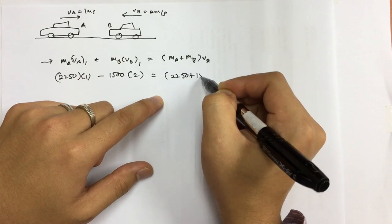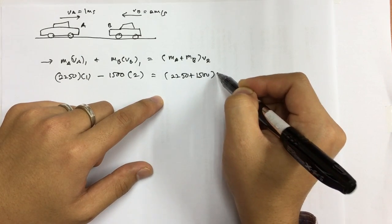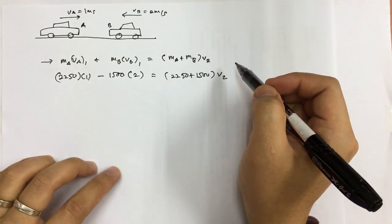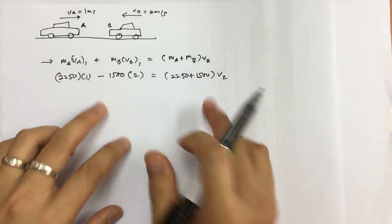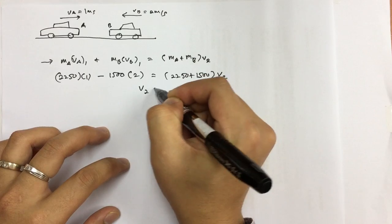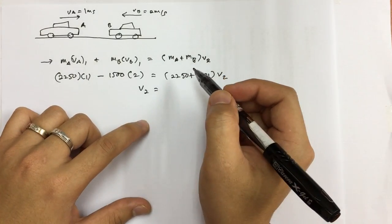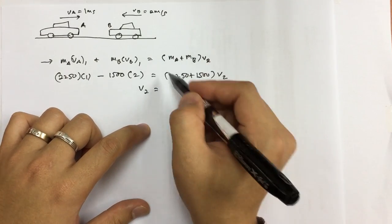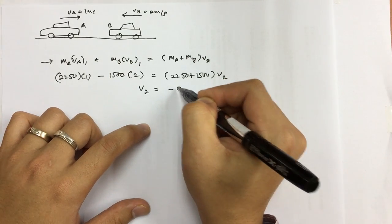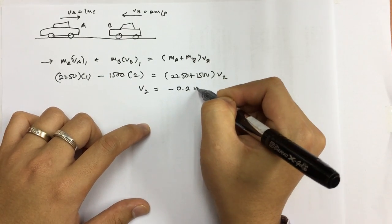2250 plus 1500 times V2. So V2 is something that we don't know yet. Once we solve for this, you are going to get the final velocity of both vehicles. So we have here minus 0.2 meters per second.